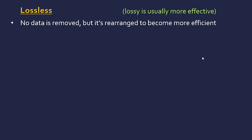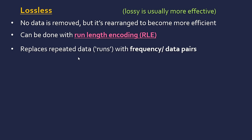One way this can be done is with run length encoding (RLE). This is all about compacting repeated data. Repeated or consecutive data is called a run. We replace long runs with frequency-data pairs. The best way to show this is with an example.